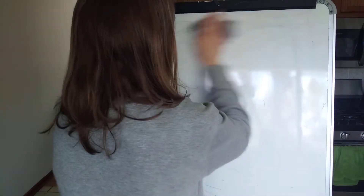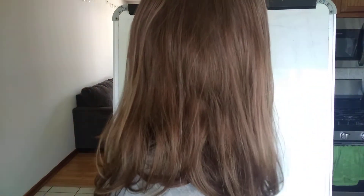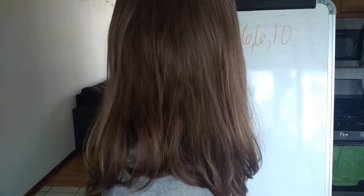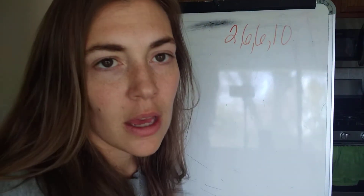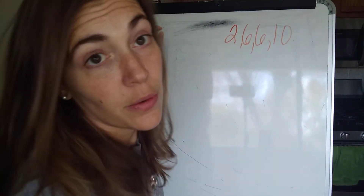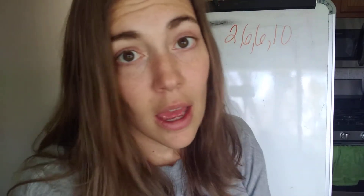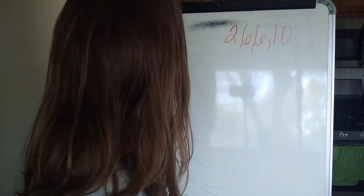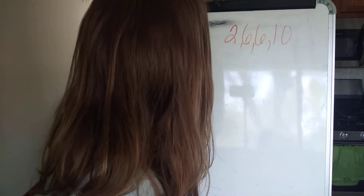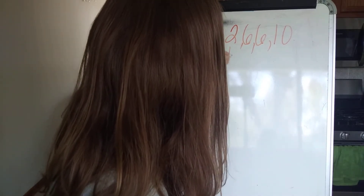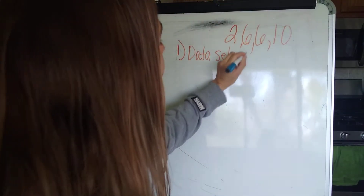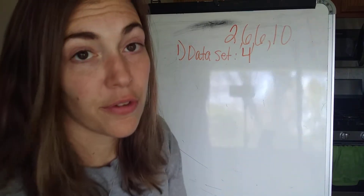Let's take the data set two, six, six, and ten. To find the mean of this data set, the first thing you should do is count how many pieces are in your data so you make sure that you aren't missing any of them. In my data set I have one, two, three, four pieces of data.